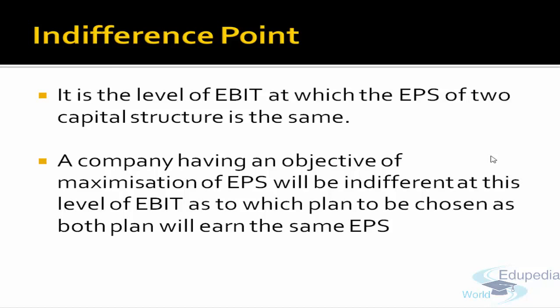But there might be a point where the EPS of two capital structures is the same. What will the company do in that scenario? If a company has the objective to maximize EPS, and both capital structures give the same EPS, that means at that point the company is indifferent between two capital structures. This point is called the indifference point.